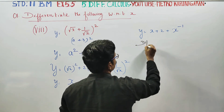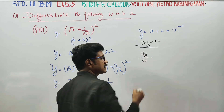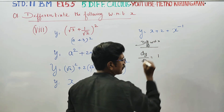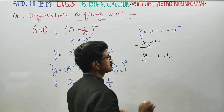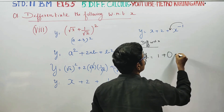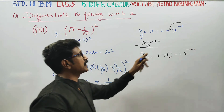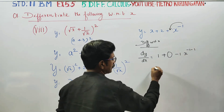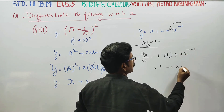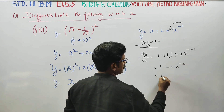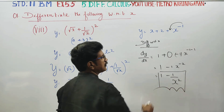Now we differentiate with respect to x. Differentiating: x power 1 gives 1, the constant 2 gives 0, and 1 by x which is x power minus 1 gives minus 1 by x power 2. This is our final answer.